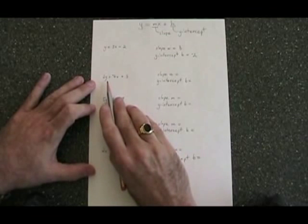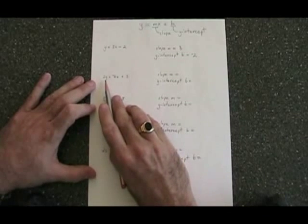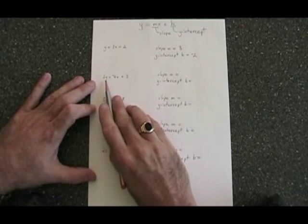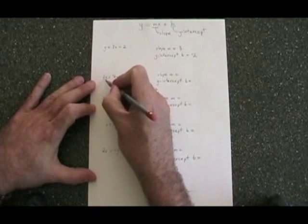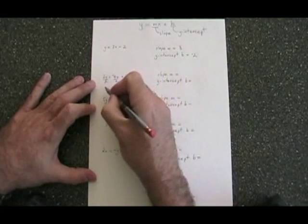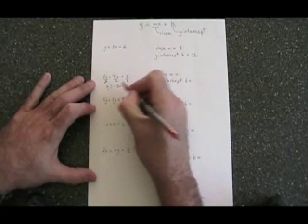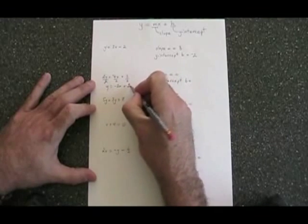In the second equation, y is not isolated yet. It has a 2 with it. If y is being multiplied by 2, we need to divide everything in the equation by 2, and this simplifies to y equals negative 2x plus 3 halves.